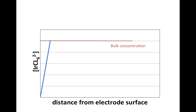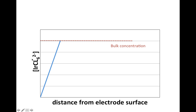As you keep going, you start depleting the hexachloroiridate near the surface more and more. More diffuses toward the electrode, more gets reduced, and you have an increased thickness of this diffusion layer — because the longer you give that reduction to work, the more of the oxidized species it destroys. So you increase the size of your diffusion layer, and if you waited a long, long time, it would look quite extended.